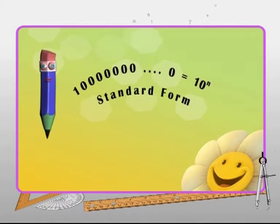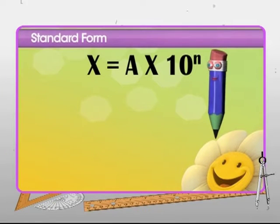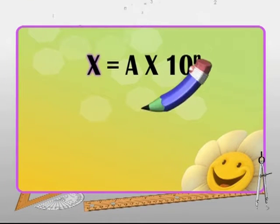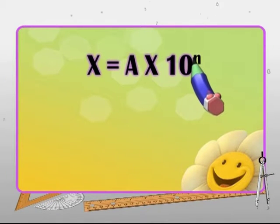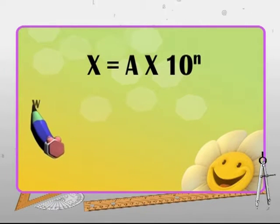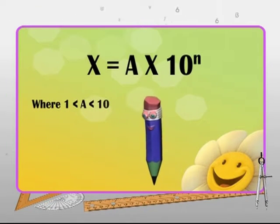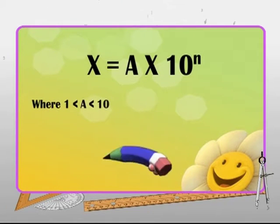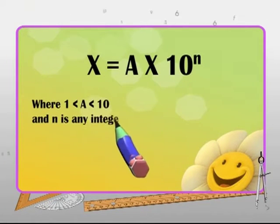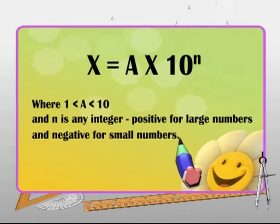Expressing numbers in standard form helps ease calculations. The general form of the standard form of a number x is: a into 10 raised to the power of n, where a is a real number between 1 and 10 — including 1 and excluding 10 — and n is any integer: positive for large numbers and negative for small numbers.